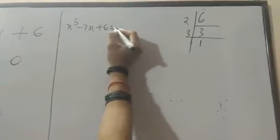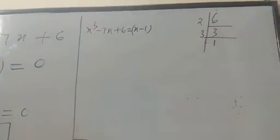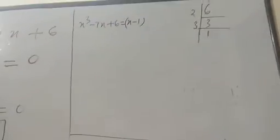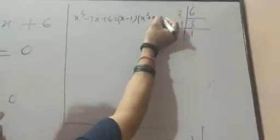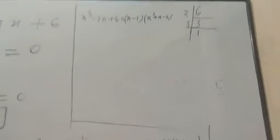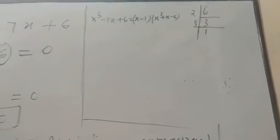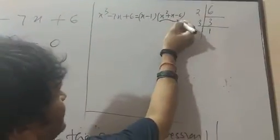Now what you will do? Again you will write the question: x³ - 7x + 6 equals first factor x - 1, second factor is the quotient: x² + x - 6. Once again you see, first factor was x - 1. Quotient, remainder is always zero. Quotient came this.